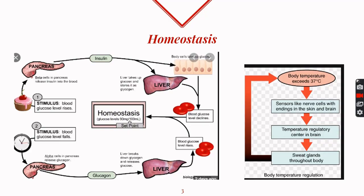Inside the body of a multicellular organism, a steady state needs to be maintained. The amount of water needs to be regulated, body temperature should be fixed, and the pH of the fluids inside the body should also be maintained so that enzymes can function properly. Maintaining this steady state inside the body is called homeostasis, and it is done by the process of excretion.